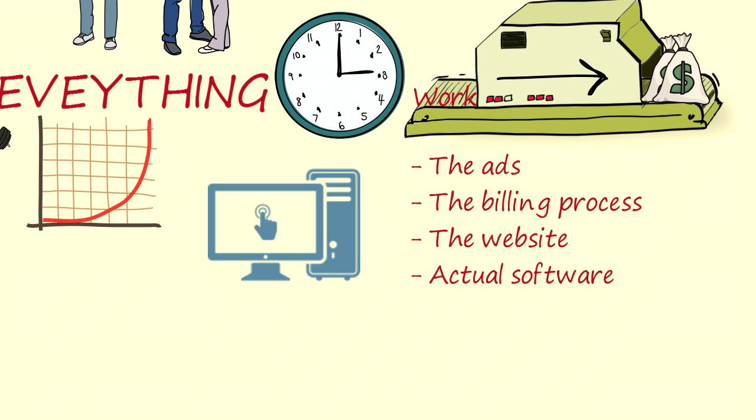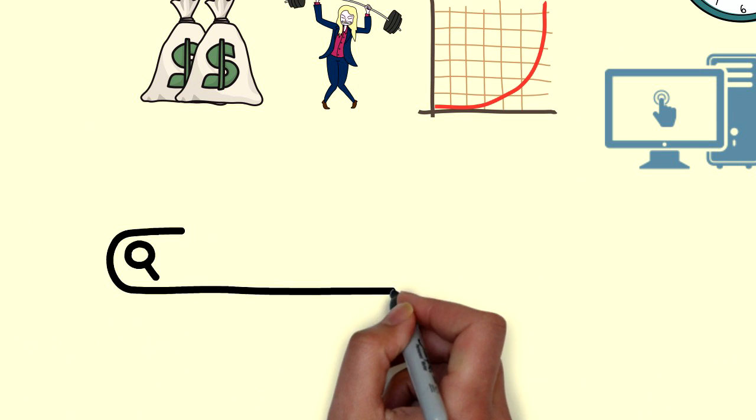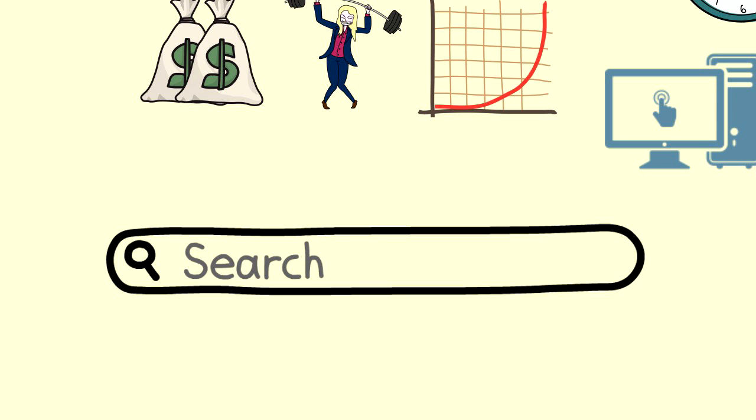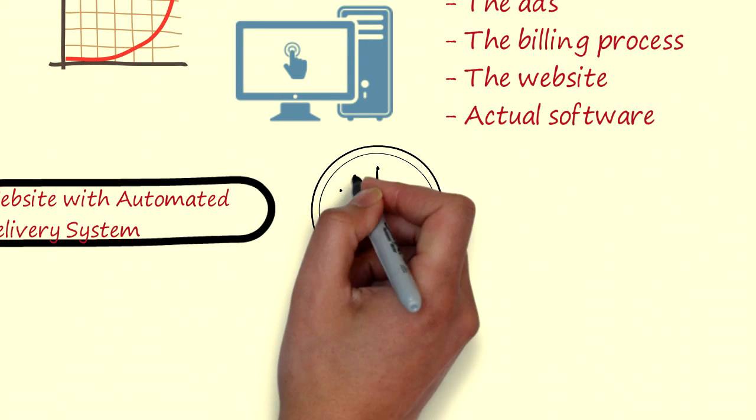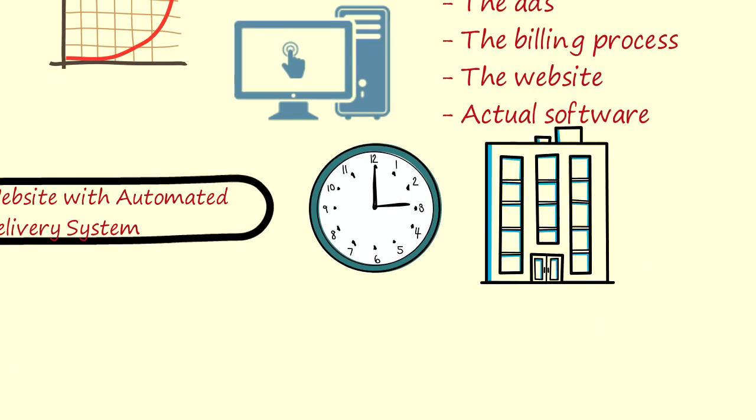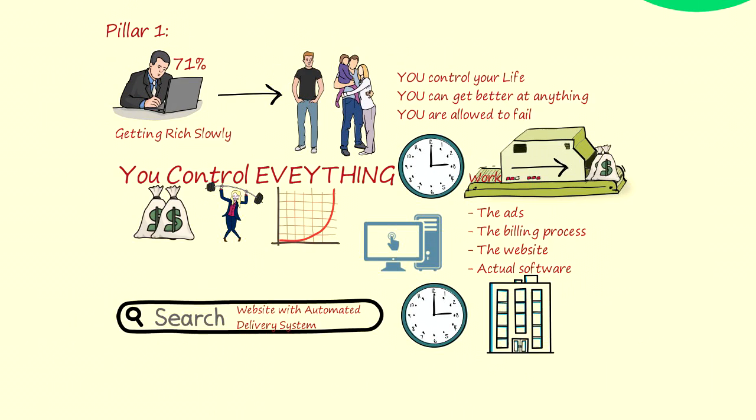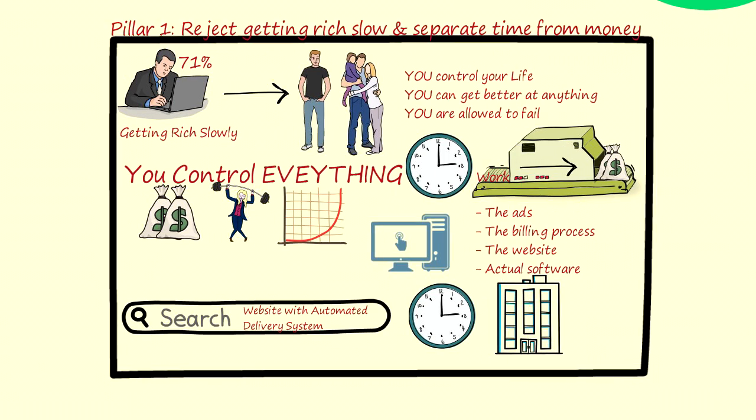The machine you have to create can take many forms, and I talked about this in the 4-hour workweek. A machine could be the software I talked about, it could be a website with an automated delivery system. Just be creative and figure out how you can separate your time from your business. Therefore, the first pillar of wealth: reject getting rich slow and separate time from money.